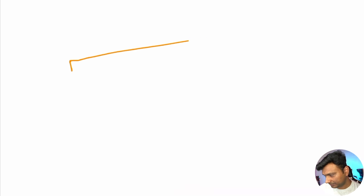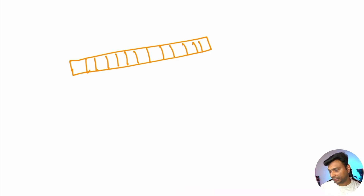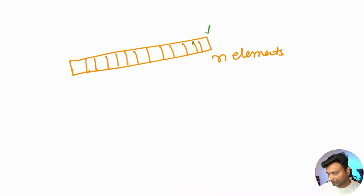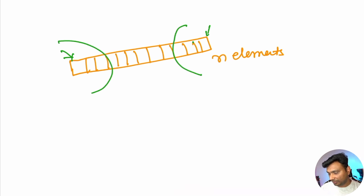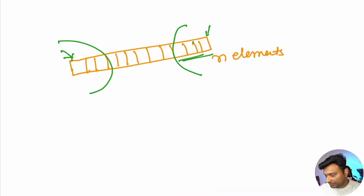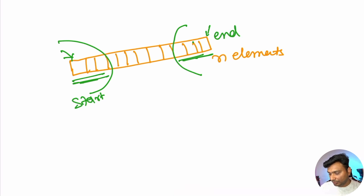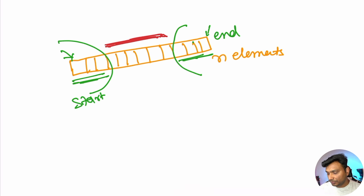Suppose we have an array with n elements. Assume your answer contains both the start and the end of the array. Your possible answer could be some part from the start and some part from the end. To maximize this start part plus end part, you need to minimize the middle part.